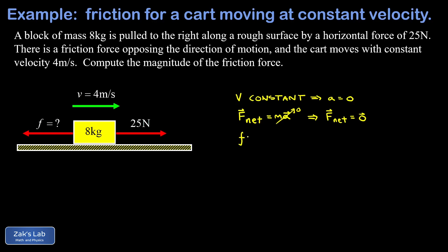In other words, our unknown friction force must have a magnitude of 25 newtons, and of course that force points to the left so that the vector sum of all the forces on the object is zero, so the velocity is constant, and we're done.